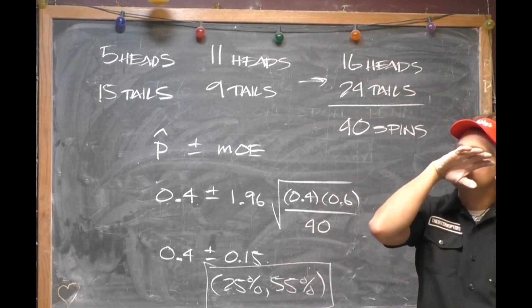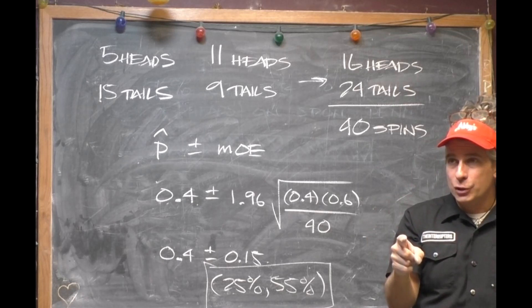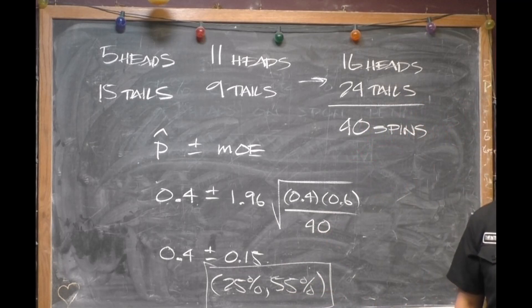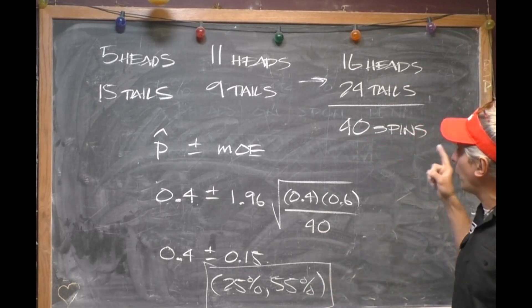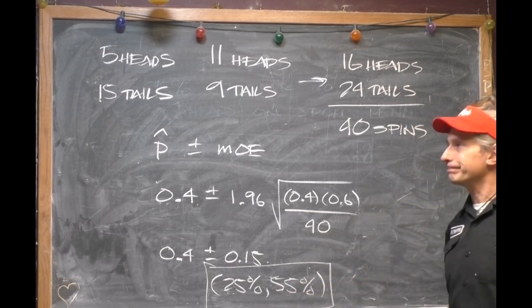The first interval we saw showed that spinning was different, but it was only based on 20 trials. As soon as we increased the trials to 40, we doubled them. Now, it looks like there's not a difference between them.